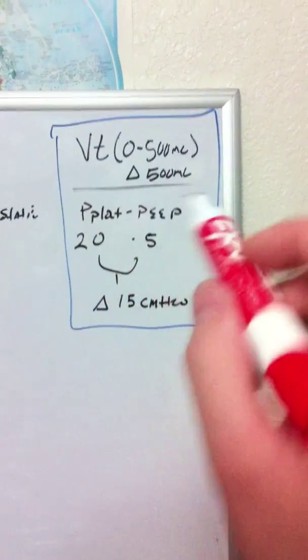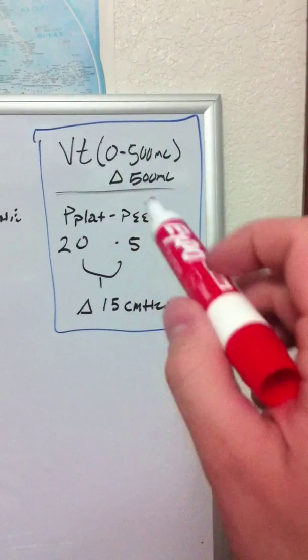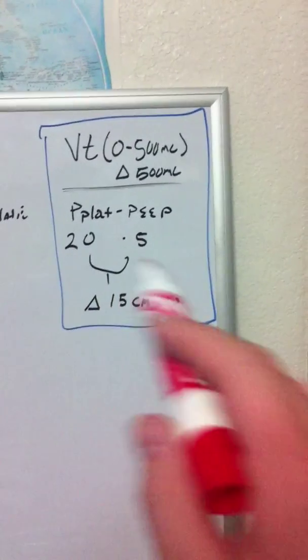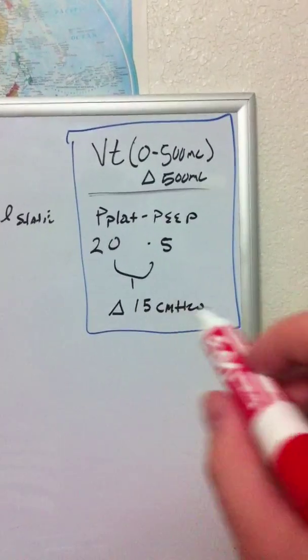Likewise, if I take my PEEP plateau, subtract the PEEP from that, and let's say my PEEP plateau is 20, my PEEP is 5, I subtract that, that gives me a delta of 15 or a difference or a change in pressure of 15.